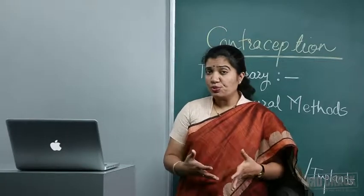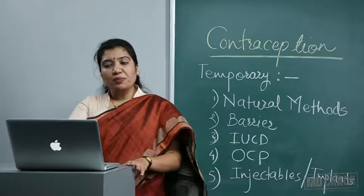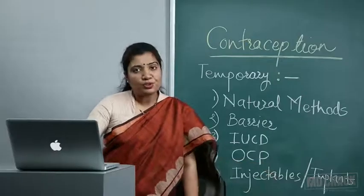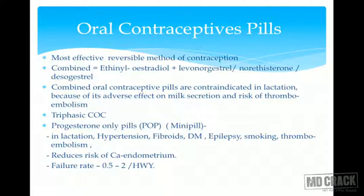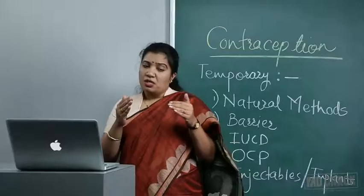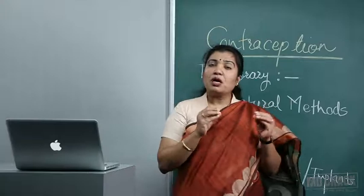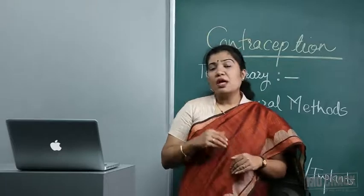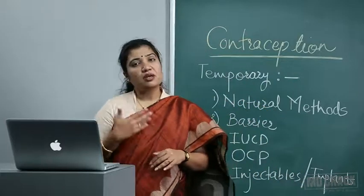Danazol can also be used but other drugs are more effective and have fewer side effects, so danazol is not practically used as emergency contraception. Moving to oral contraceptive pills — a very commonly used and popular method, the most effective reversible method of contraception. Combined OCP contains ethinyl estradiol plus either levonorgestrel, norethisterone, or newer-generation progestogens like desogestrel.